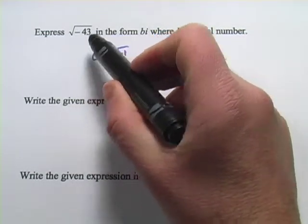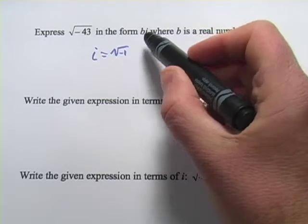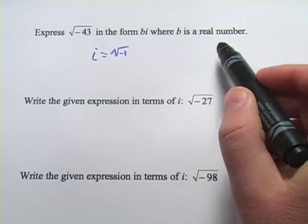This first problem says express the square root of negative 43 in the form bi where b is a real number.